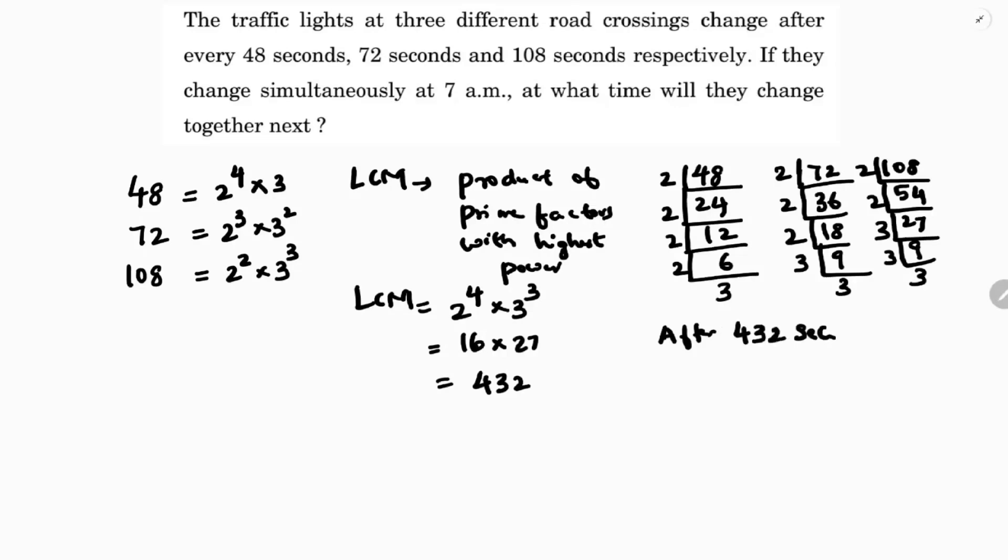So after 432 seconds, all three will change together. But they're asking at what time. So it is in seconds, so divide by 60 because one minute is 60 seconds. 432 divided by 60 gives 7 with remainder 12.